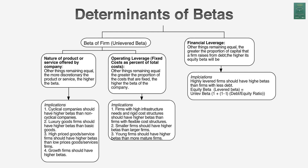The third and final ingredient: when you borrow money, you create a fixed cost you did not have until you borrowed that money. Interest expenses make good times even better for equity investors and bad times even worse — they magnify risk again. So the more you borrow, the higher your beta will be as a company.